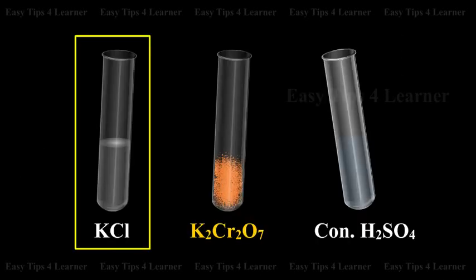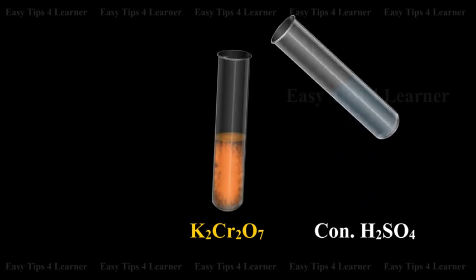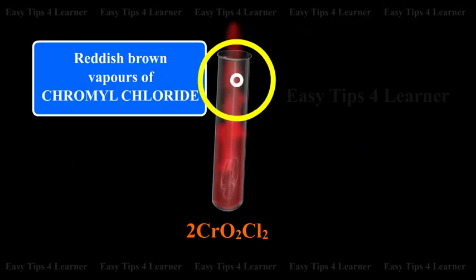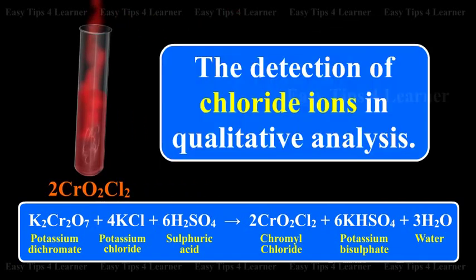Chromyl chloride test: When a salt containing chloride is treated with potassium dichromate and concentrated sulfuric acid, reddish-brown vapors of chromyl chloride are obtained. Potassium dichromate + potassium chloride + sulfuric acid gives chromyl chloride + potassium bisulfate + water. This reaction is used in the detection of chloride ions in qualitative analysis.